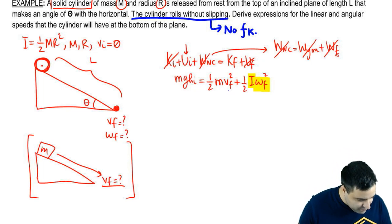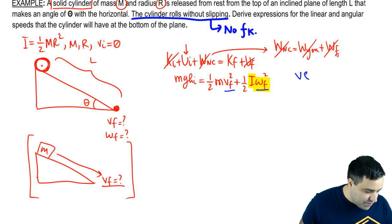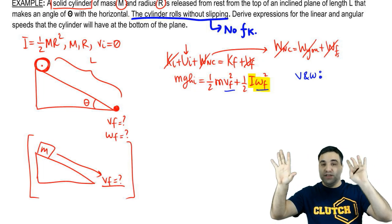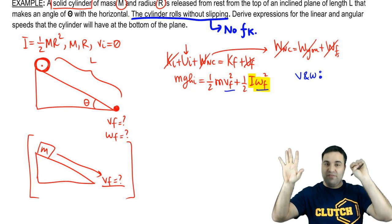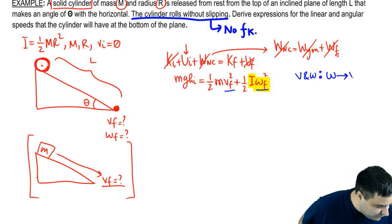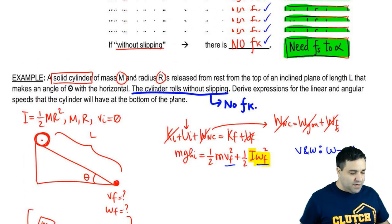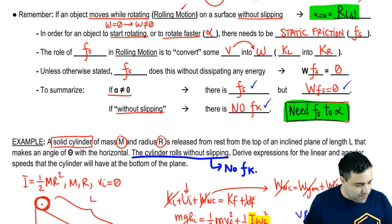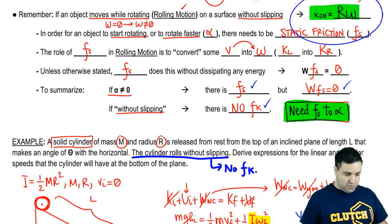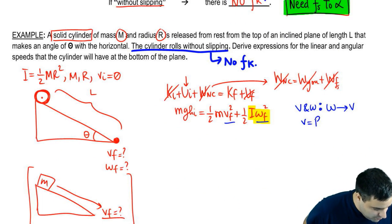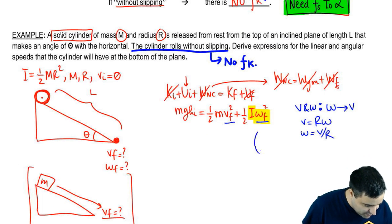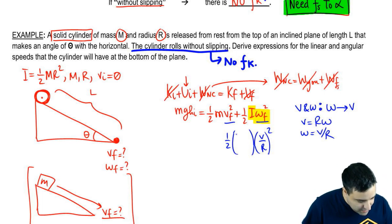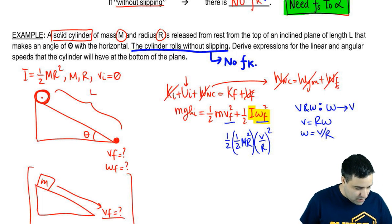So what we're going to do is we're going to expand I and we're going to rewrite omega. The reason we're going to rewrite omega is because we have V and omega. And remember, whenever we have V and omega, what we always want to do is instead of having two variables, V and omega, we want to rewrite omega so we have V and V, which is the same variable. So we're going to change omega into V. And we're able to do this because in rolling motion, we have this extra equation right here. So I can use that equation to replace it. So V equals R omega, therefore omega is V over R. So here, instead of omega, I'm going to write V over R. And then I'm going to plug in I here. I is half MR squared.